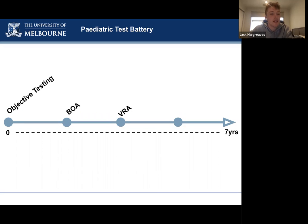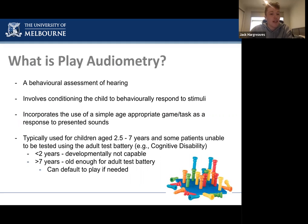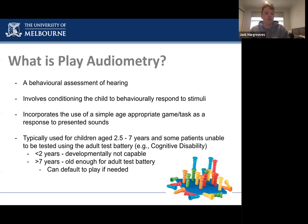Finally, at around two to two and a half years old, we reach play audiometry. Like VRA, play is a behavioral assessment of hearing. It involves teaching the child to play a simple game in response to sound stimuli. Games can vary and may include connect four — where the child puts a counter in when they hear the sound — or something as simple as putting a toy dinosaur in a bucket. Play is typically used from two to seven years old, though these aren't strict guidelines. Some two-and-a-half-year-olds may not be ready and revert to VRA, while some older children or certain adult populations may also be tested under play.